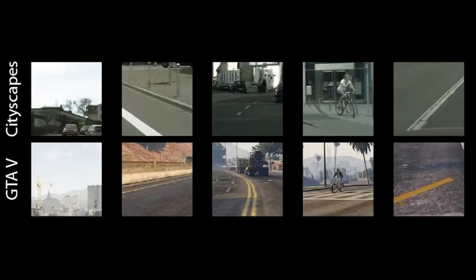One part of our solution is to decrease the field of view for the network and show it corresponding scenes from both datasets. When training our network, we sample rendered and real image patches that roughly contain the same things. This is done automatically and requires no access to semantic label maps. More details can be found in our paper.